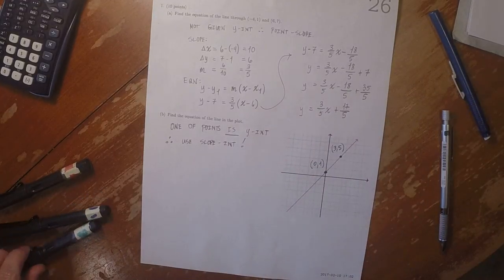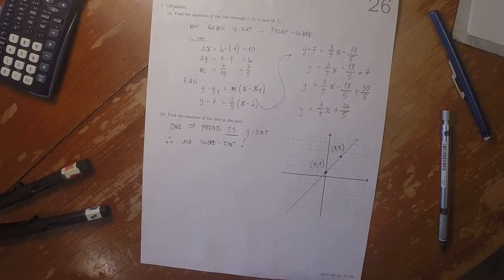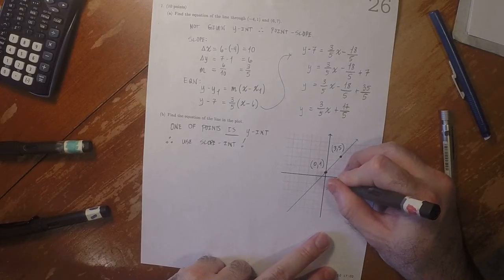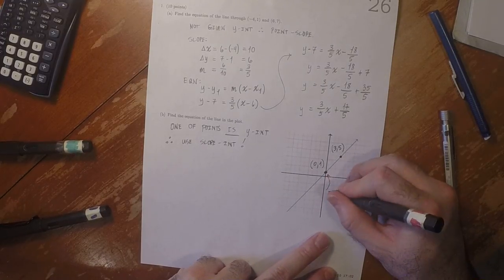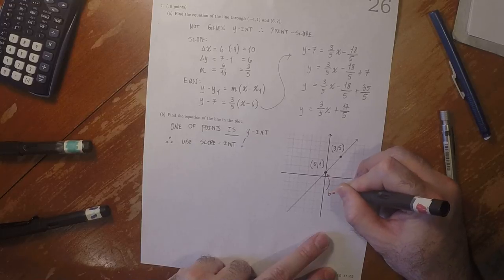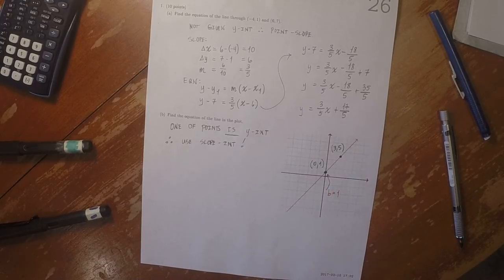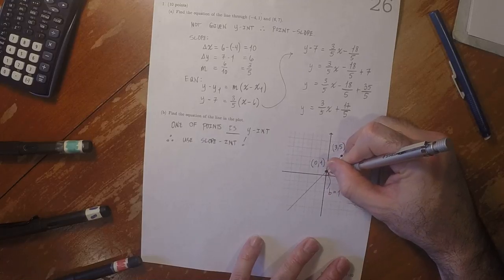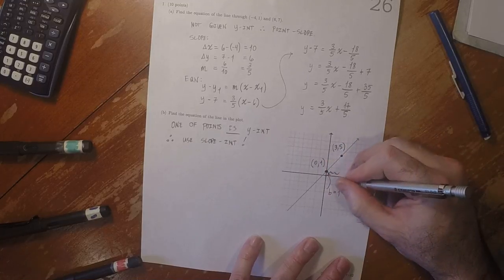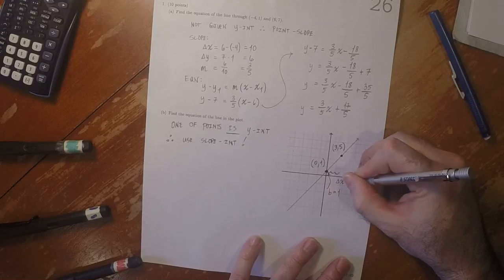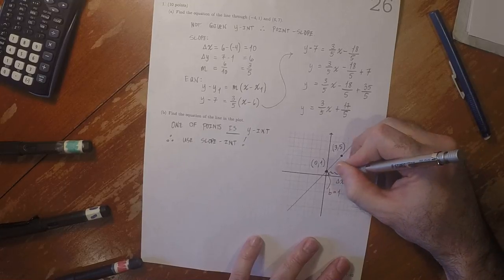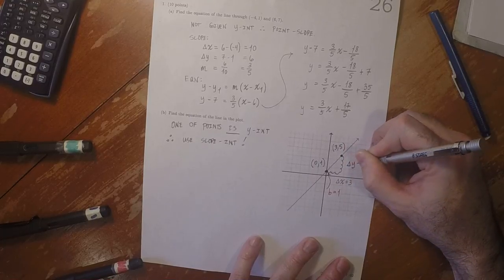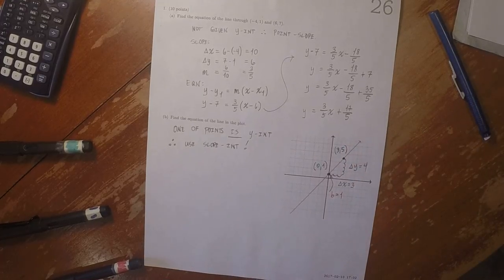Specifically, this point here is telling us that b is 1. Now if we count, that's 1, 2, 3, so delta x is 3. And 1, 2, 3, 4, so delta y is 4.